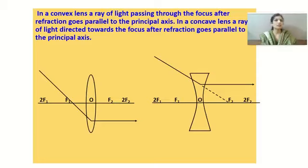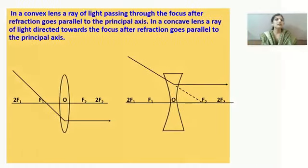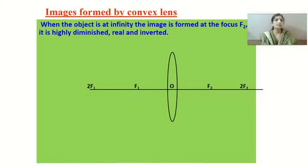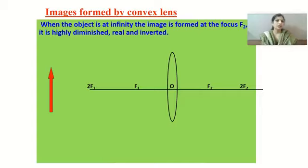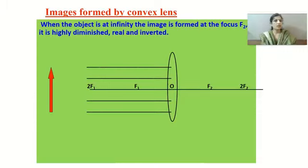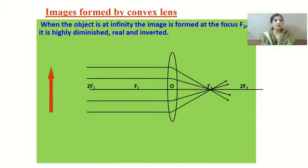Out of the three rays, we can use any two to draw the ray diagram and find the position of the image. Now let's discuss images formed by a convex lens. When the object is placed at infinity, the rays of light from infinity appear parallel to each other; they converge at focus F₂ on the principal axis. The image formed here is highly diminished, real, and inverted.